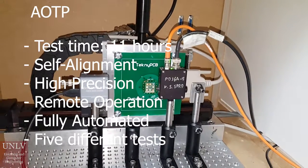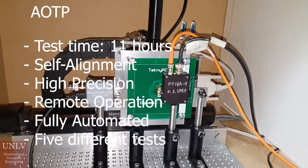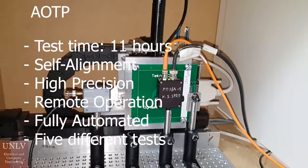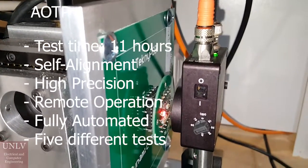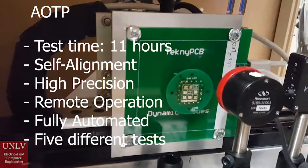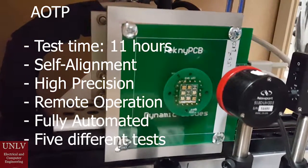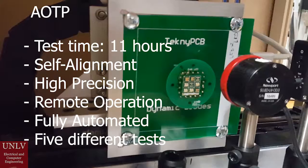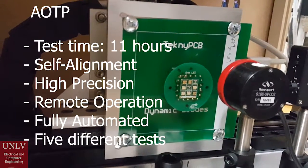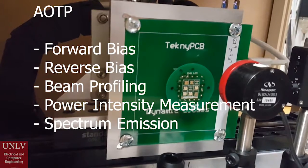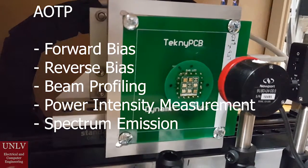The solution proposed is the automated optoelectronic testing platform, or AOTP. The AOTP is a high-precision automated mechanical system that measures the characteristics of up to 9 LEDs under 11 hours by passing through 5 different tests. The platform allows scientists to gather data from experiments in a more precise and efficient way.